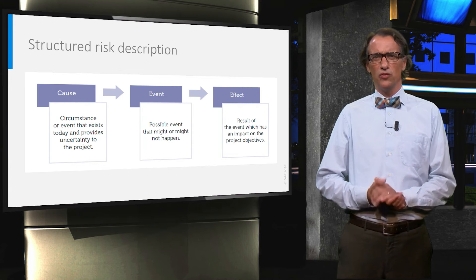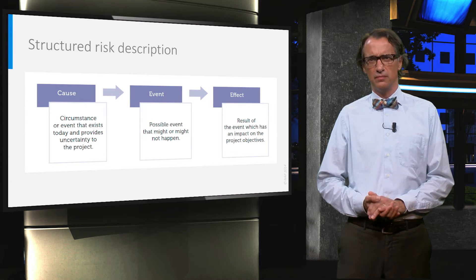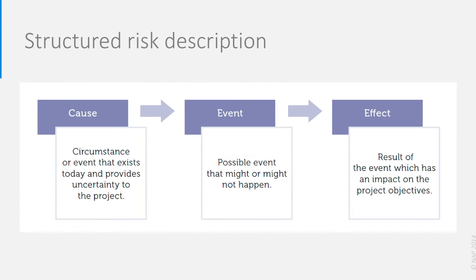Let's look at the proper formulation of a risk. In the project context, we distinguish the cause of a risk, the risk event itself, and its effect. The cause is the circumstance that exists today that provides uncertainty to your project. The event is the possible event that might or might not happen. The effect is the result of the event which has an impact on the project objectives.